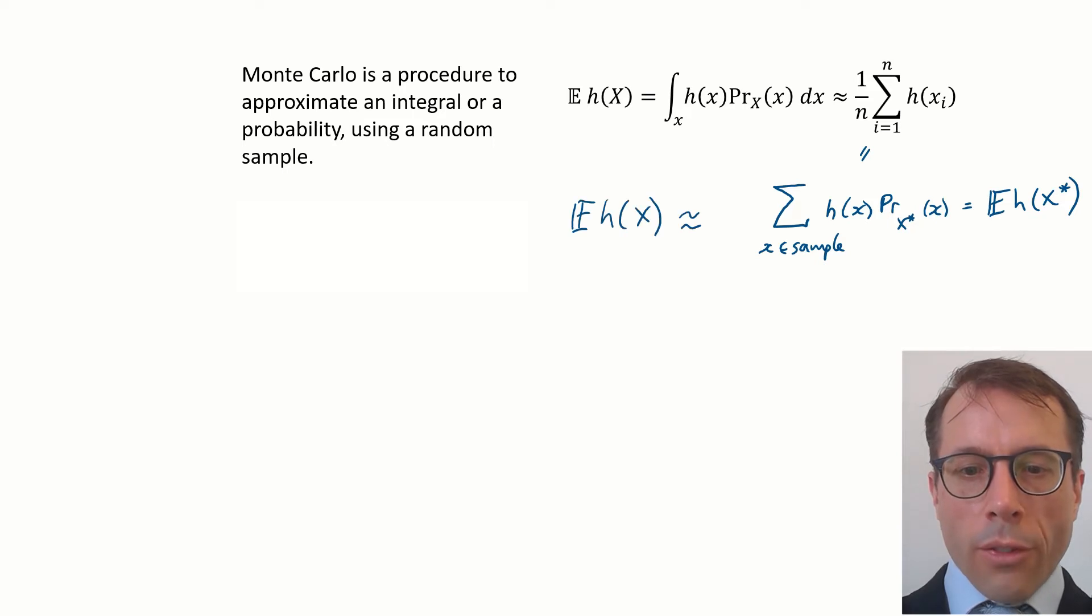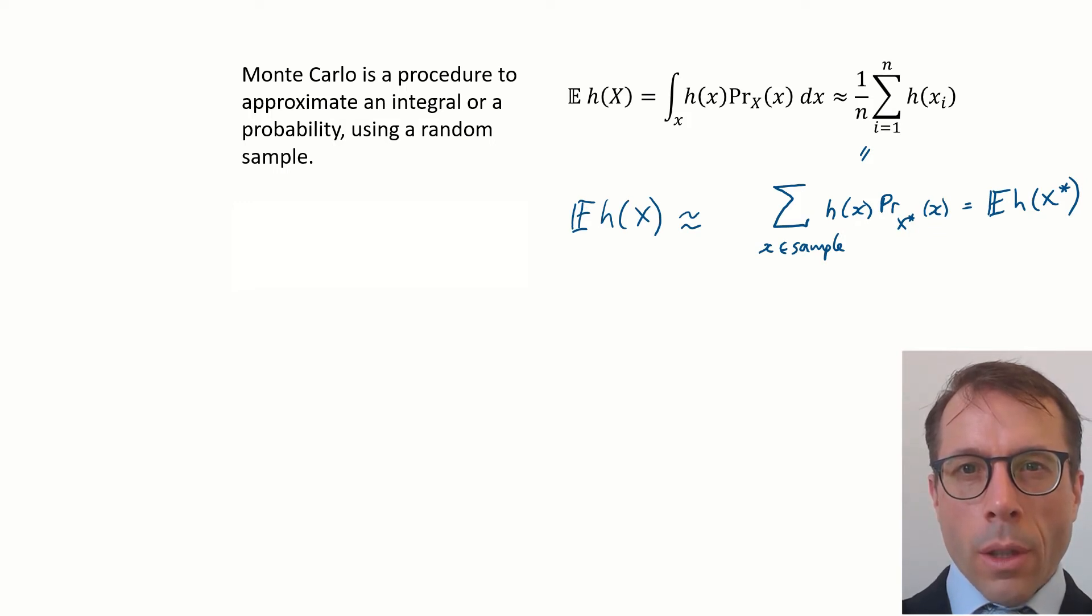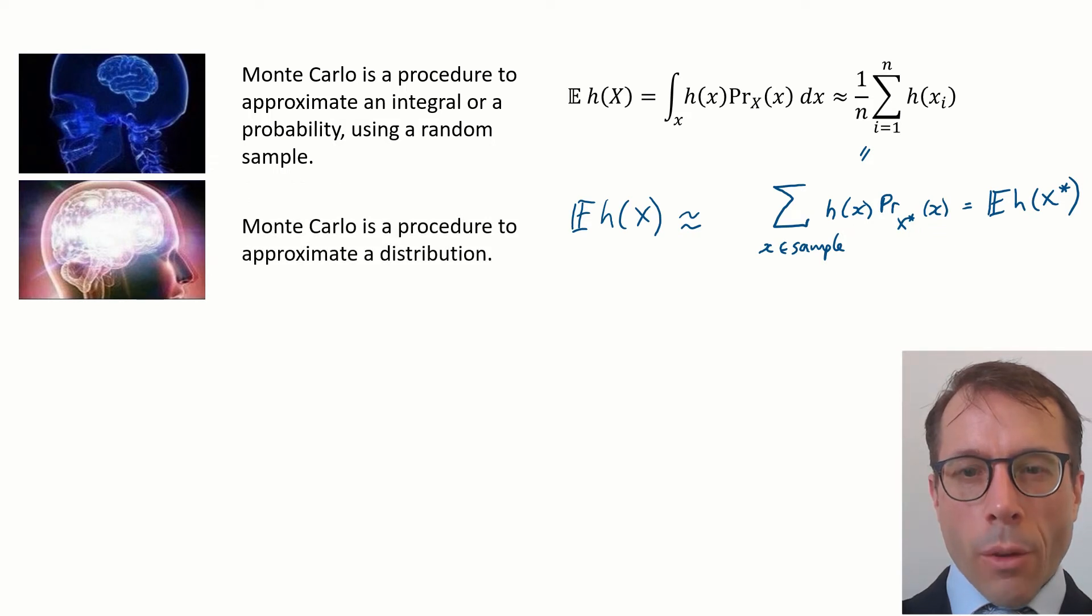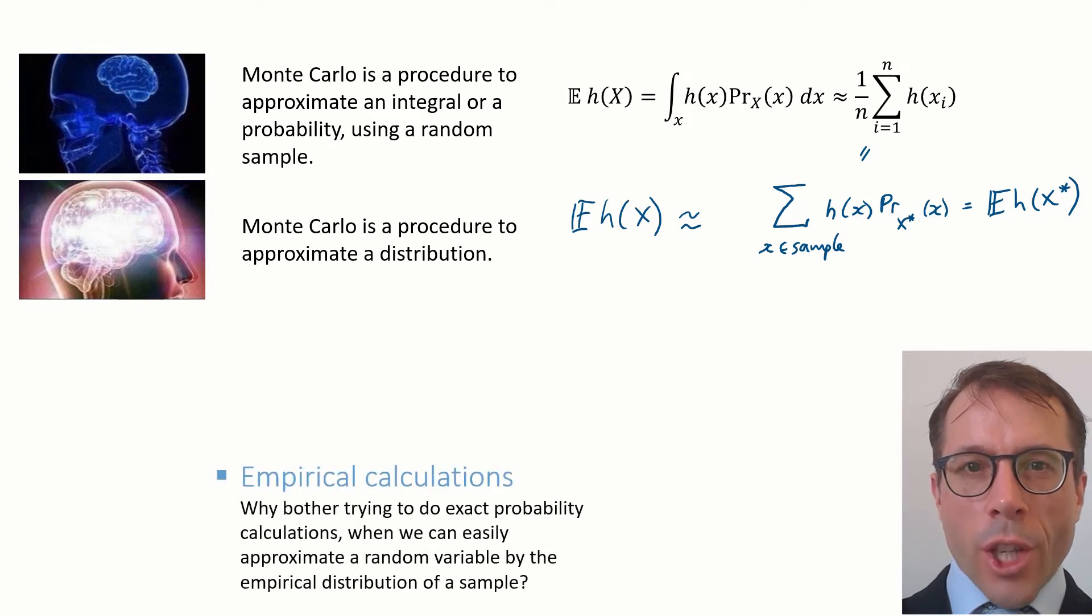So what we're really saying is that we can approximate a random variable x by the empirical distribution x star. This approximation works for any readout function h, so that's not the important thing here. What's important is what we're approximating. So don't read Monte Carlo as just a way to approximate an integral. Read it as a way to approximate the random variable x itself. The message here is why bother trying to do exact probability calculations with random variables when it's perfectly easy to get an approximating random variable and to do the calculations with this approximation.